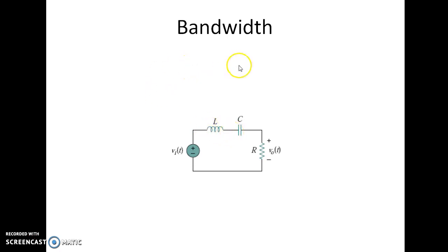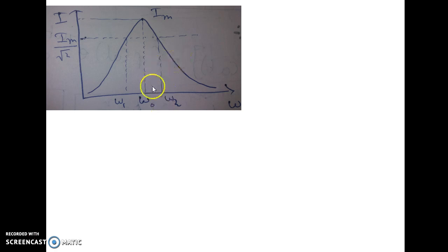Now in this video, I am going to show you the mathematical expression of the bandwidth of this resonating circuit. So you know that this is the graph for current for various values of omega and the omega 1 and omega 2 are called half power frequency and the omega 0 is called resonant frequency.